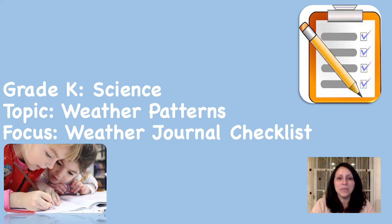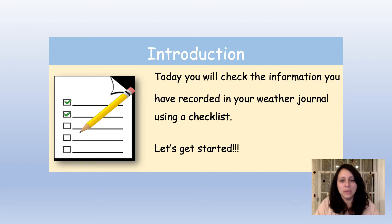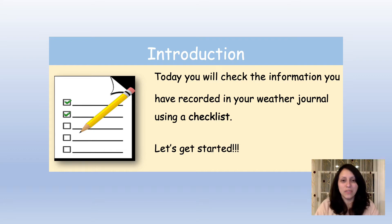Hello scientists! You've been studying about weather patterns. Today we're going to focus on a weather journal checklist. You will check the information you have recorded in your weather journal using a checklist. What is a checklist? It's a list of information that you look at and check to see if it's in your journal. You give yourself a check if you have that information in your journal. Let's get started.